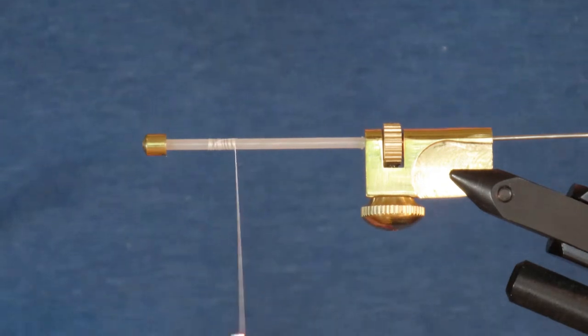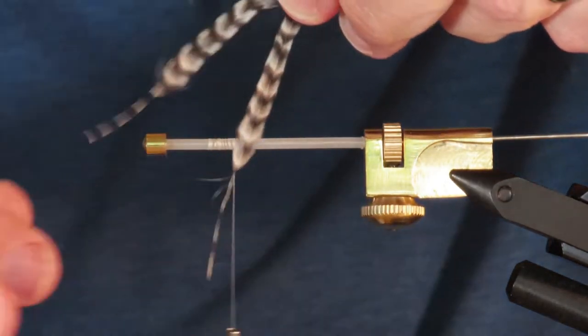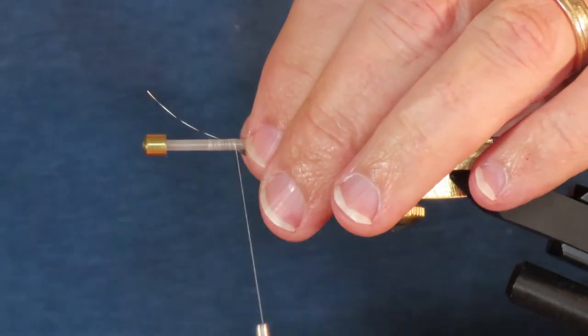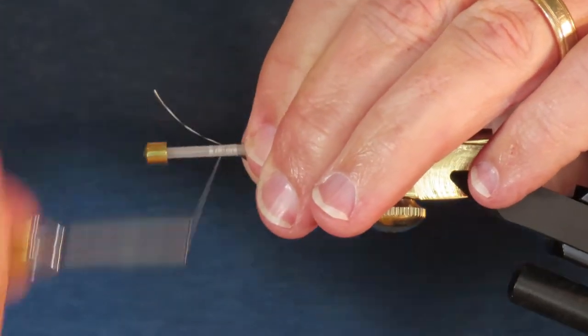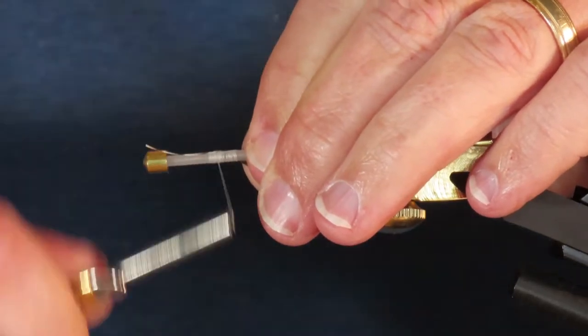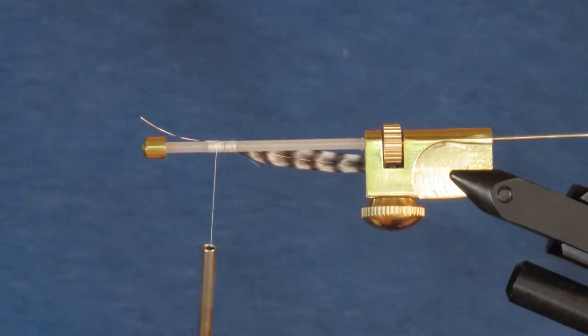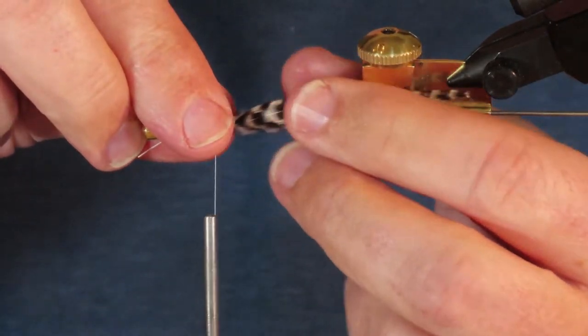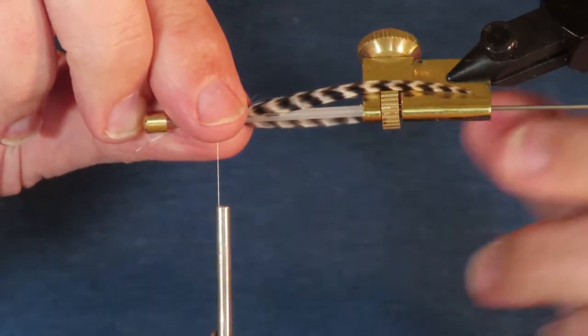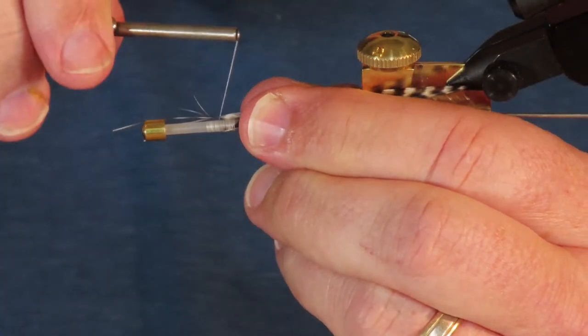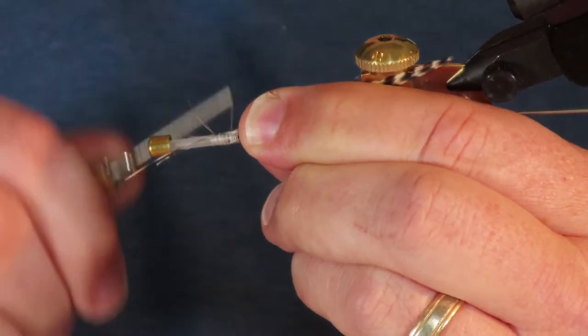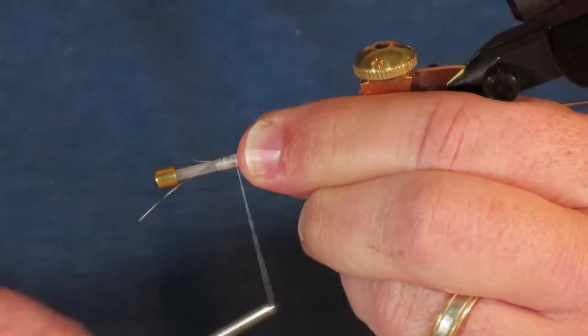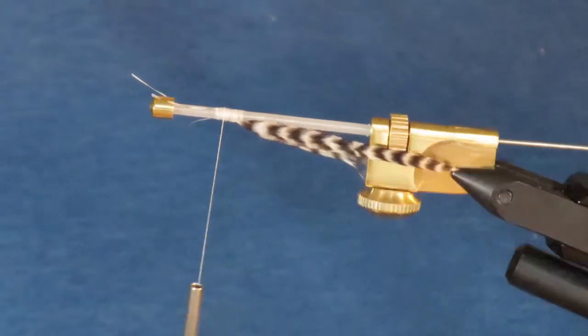I've already prepared two matching grizzly feathers from a rooster cape, trimmed so that there's two inches of feather. How wide you want these is up to you, but I prefer pretty skinny hackles. I'm going to tie one of these in along my side, pointing it slightly downward. Now I'll rotate the vise and tie in the other feather in exactly the same way, keeping them aligned. Obviously you want to have the shiny side of these feathers to face outward. Those look pretty good. Now I'll just trim away the excess stems.